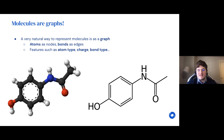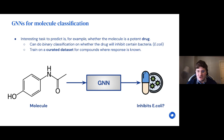You can put various featurizations on both atoms and bonds — such as the atom type, its charge, the bond type, whether it's in a ring, and so on. One interesting thing to do with a molecule in this representation is predict whether it will inhibit a certain bacterium — like, is it a potent drug? You can build a binary classification dataset where you have many molecules and you know whether they have a strong response against Escherichia coli, and train a graph neural network to predict a single binary value.